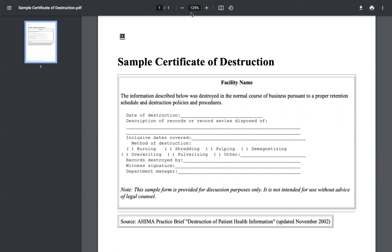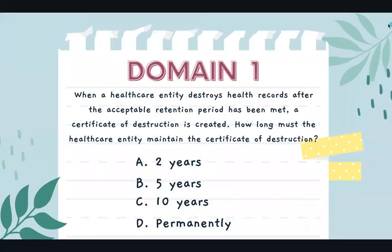Now that we know what a COD is, how long would we want to keep the COD as a healthcare entity? Would it be two years, five years, ten years, or permanently? The correct answer here is permanently. You would want to have a permanent audit trail of every document that has been destroyed for that facility. So the correct answer is D.